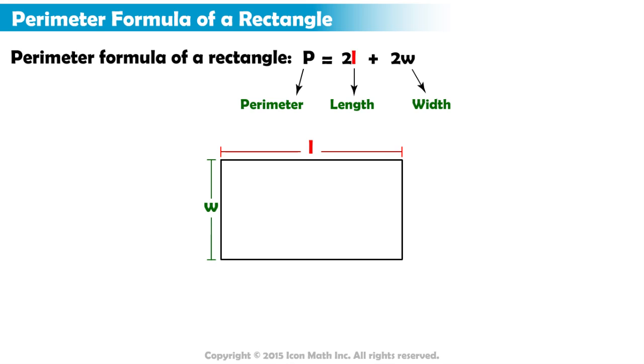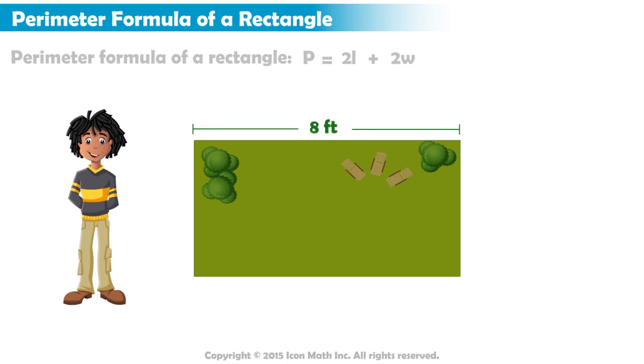If you know the length and width of a rectangle, you can substitute these values into the perimeter formula to calculate the perimeter. Luca's garden is 8 feet long and 4 feet wide. He needs to determine the perimeter in order to buy fencing to protect his garden from rabbits.